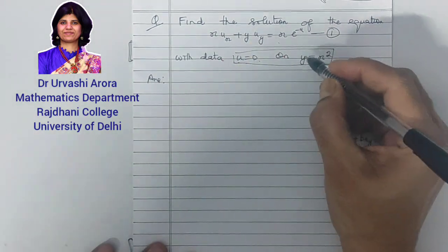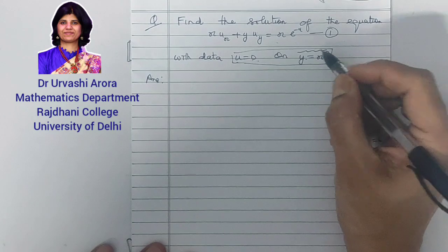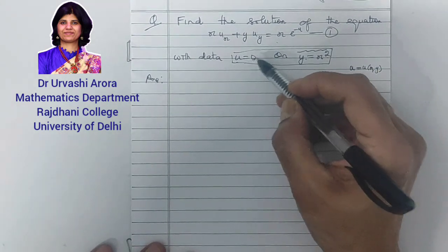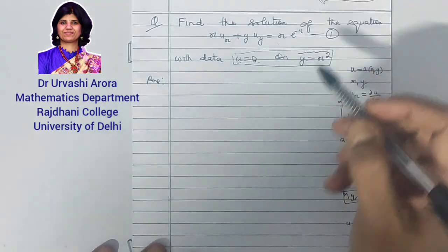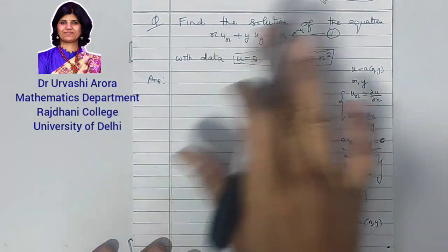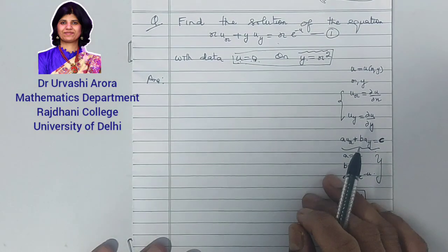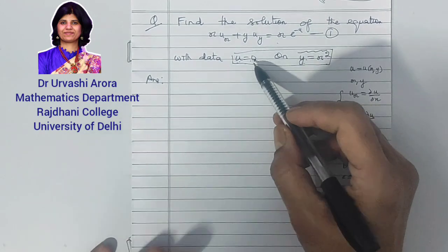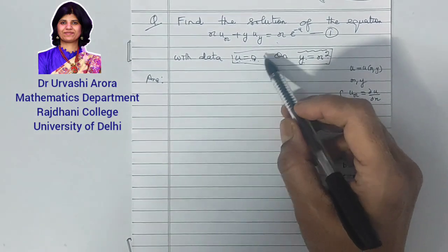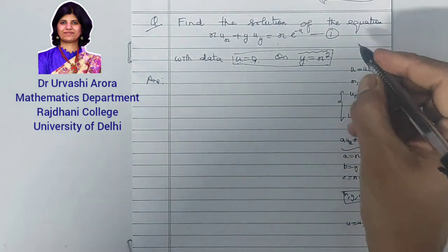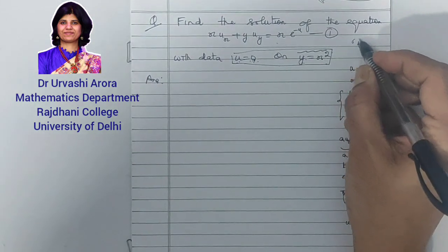This whole condition is called the initial condition. The curve y = x² is the initial curve, and the value u = 0 is the initial data. When we discussed the theory of the Cauchy problem for first order quasi-linear equations, the initial data and initial curve were all expressible in terms of a parameter t.